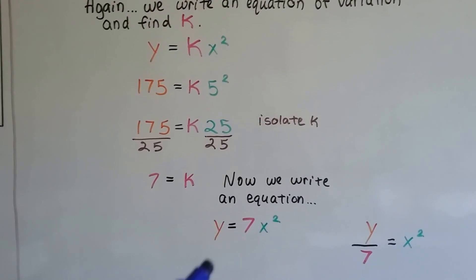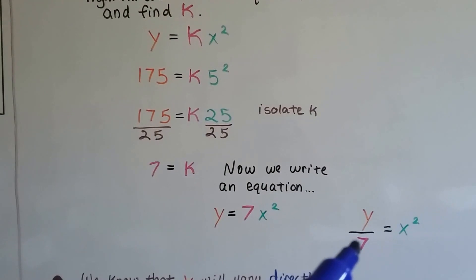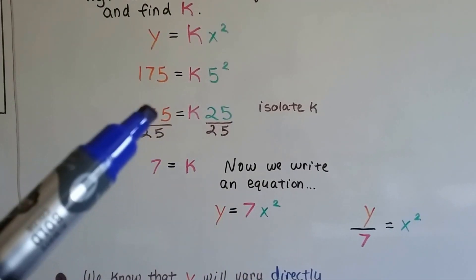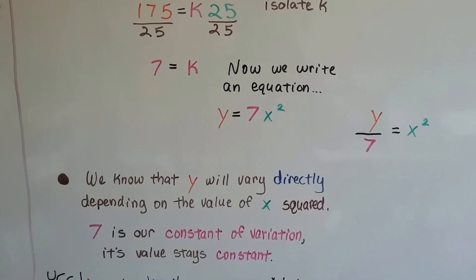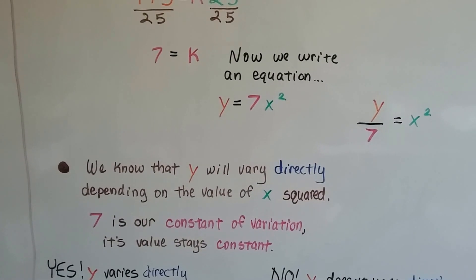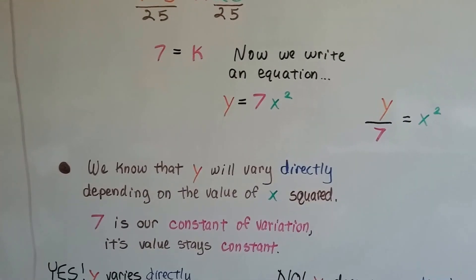Now we write an equation, y equals 7x squared. We can also say y divided by 7 equals x squared. We know that y will vary directly depending on the value of x squared. 7 is our constant of variation. Its value stays constant.